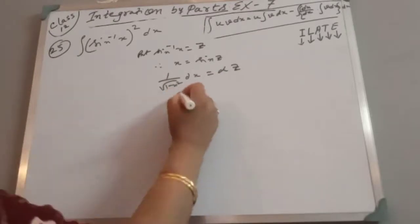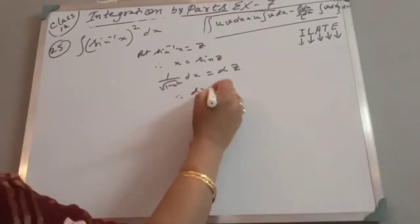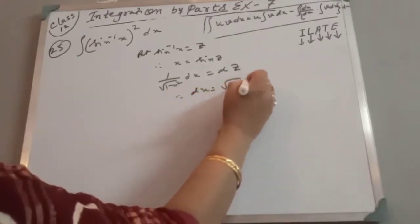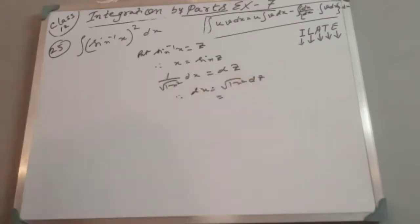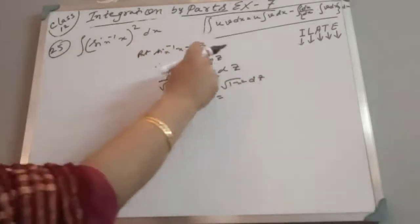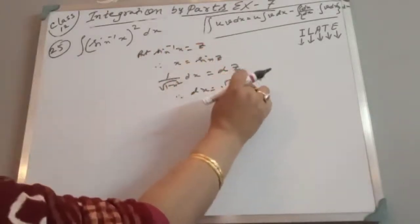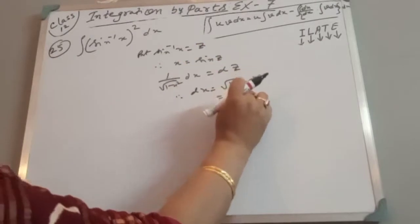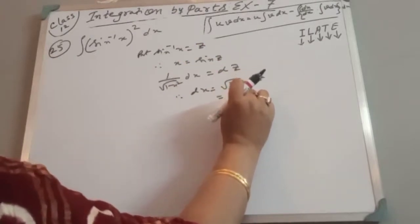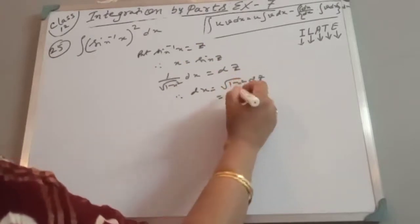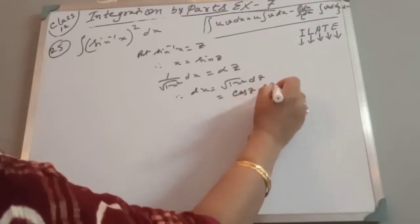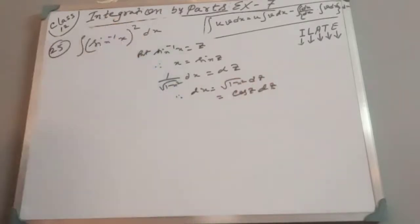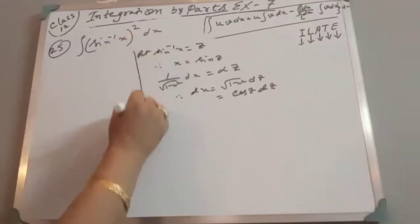Therefore dx = √(1 - x²) · dz. And 1 - x² = 1 - sin²z, so √(1 - sin²z) = √(cos²z) = cos z. So dx = cos z · dz.